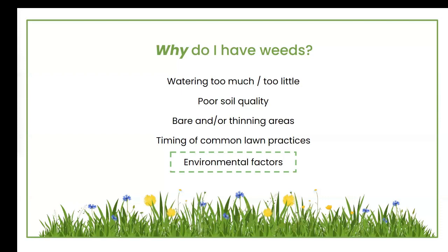Your lawn could be too thin or have a lot of bare areas. Weeds are opportunistic growers, meaning they'll grow anywhere they possibly can. If you don't have grass growing there, weeds are going to start sprouting. The timing of common lawn practices like aerating and thatching can also cause weed growth. We recommend doing these preferably in the fall to reduce the likelihood of excessive weed growth afterward.